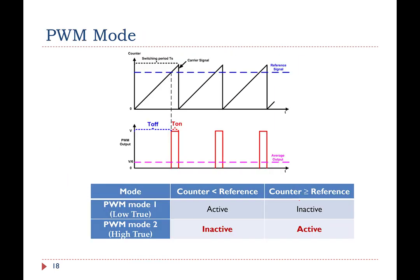When generating PWM signals with up-counting in edge-aligned mode, there are two modes of operation that are essentially opposite. PWM mode 1 and PWM mode 2 distinguish between negative-active and positive-active logic, similar to what was discussed in electronics courses.